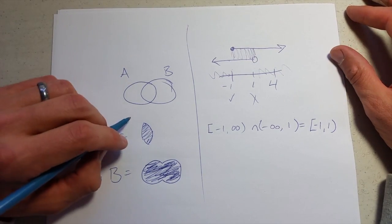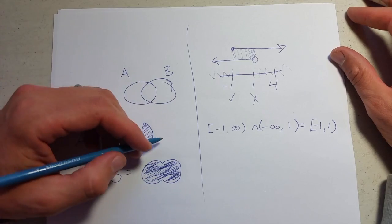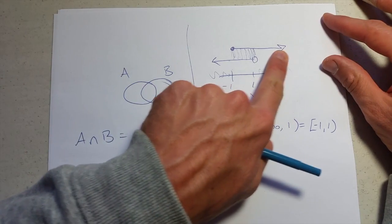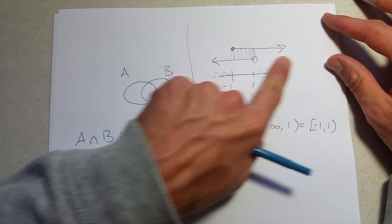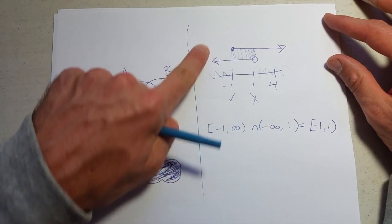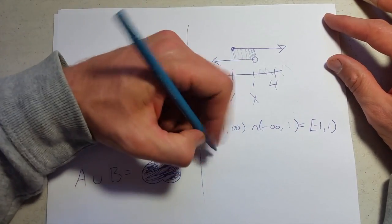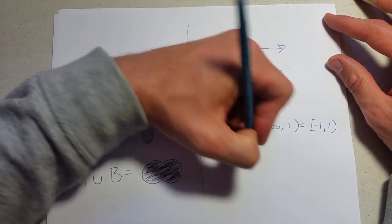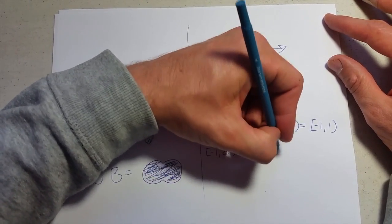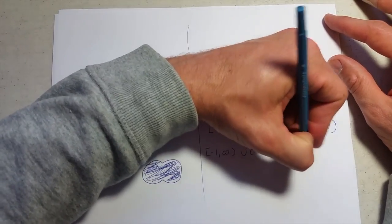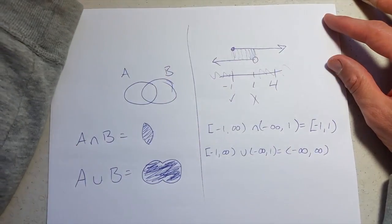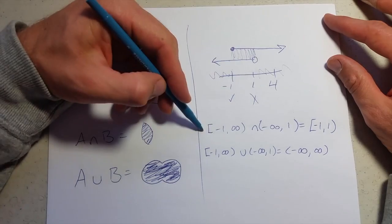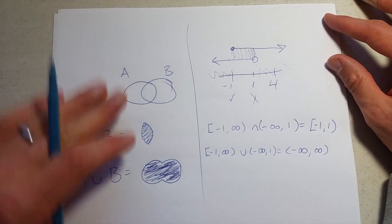So that's intersections. Unions—if I union these two together, you can see that no matter what number we have on the number line, we're going to be in at least one of these two. So if I write a union of these, we get everything from negative infinity to positive infinity. So there's an intersection and a union.